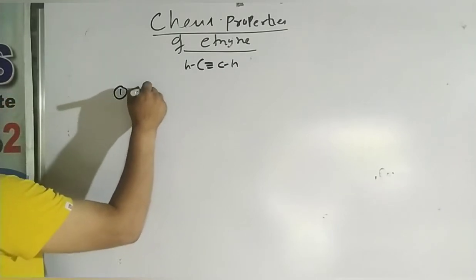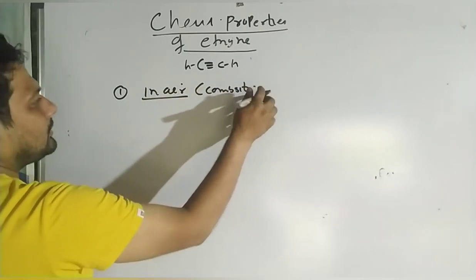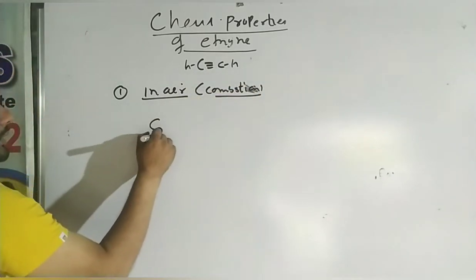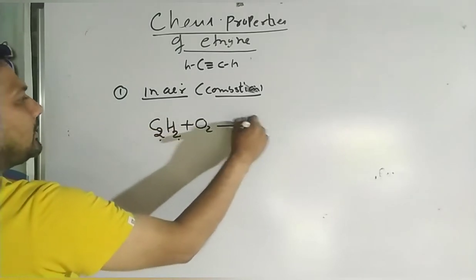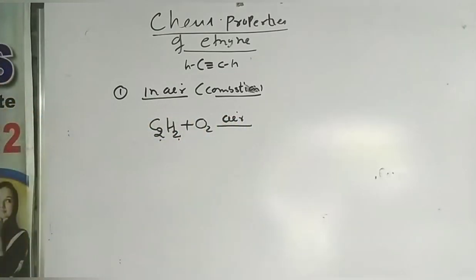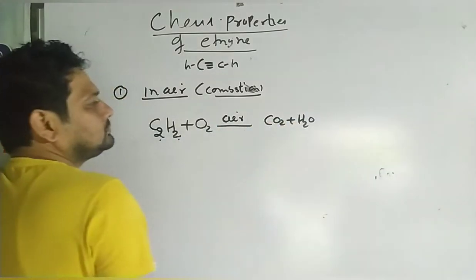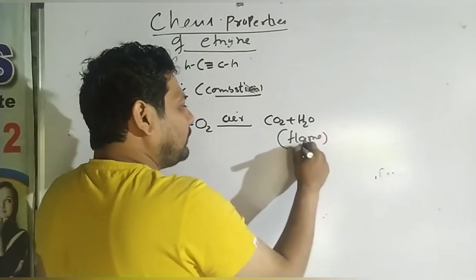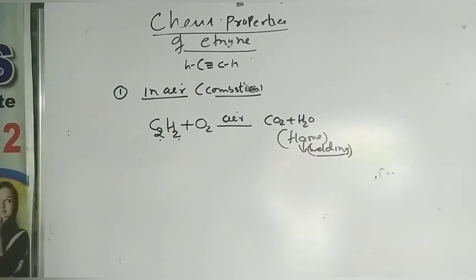First chemical property: combustion. This is an organic compound. When acetylene C2H2 is burned with oxygen in air, the products are CO2 plus water. This combustion produces a very hot flame which is used for welding. The flame produced from ethyne burning in air releases CO2 gas and water.